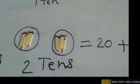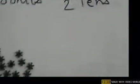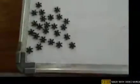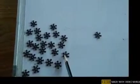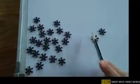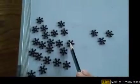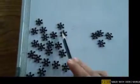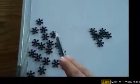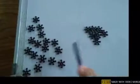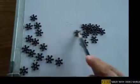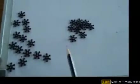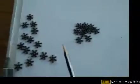Now let's go to our third example. Here I am having some flowers. Let's count with me: 1, 2, 3, 4, 5, 6, 7, 8, 9, and 10. I have formed one group of 10.